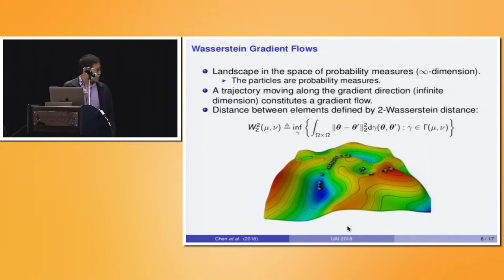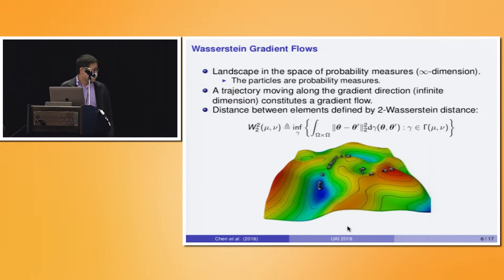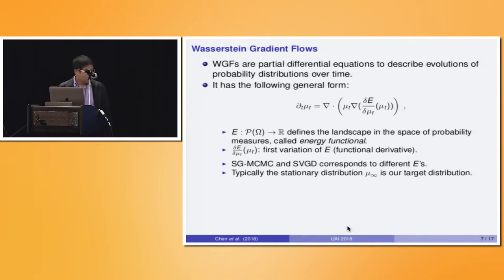The distance between elements in this curve is described by the second-order Wasserstein distance, which is essentially the minimum of the expected difference over all joint distributions gamma of theta and theta prime, where capital Gamma is the set of all such joint distributions. Mathematically, the gradient flow is defined as a partial differential equation describing the evolution of probability distributions over time.